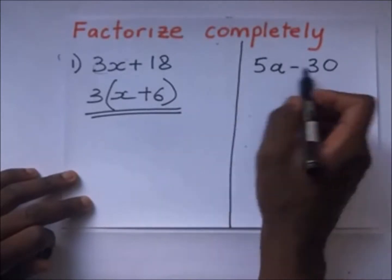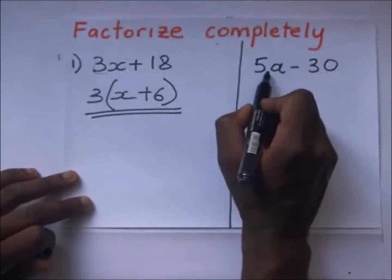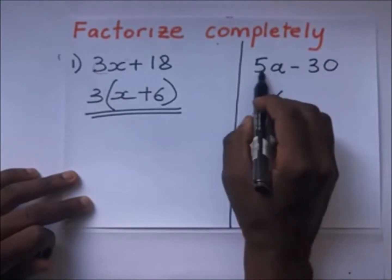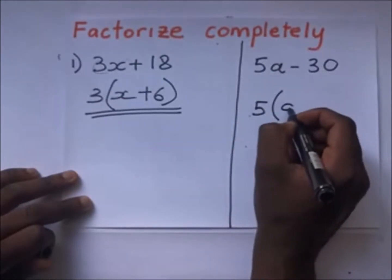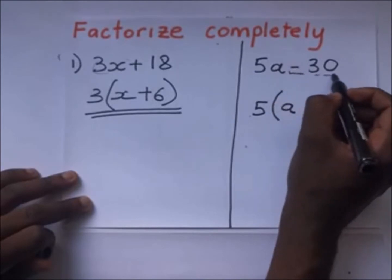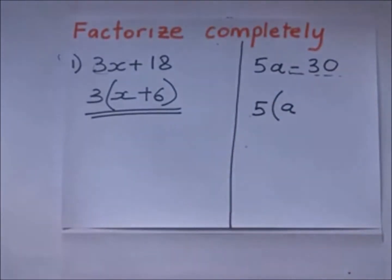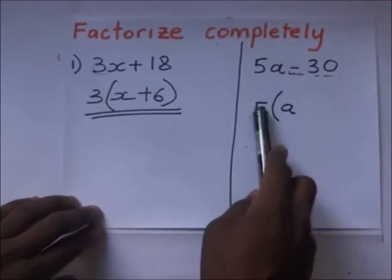We come to this one: 5a minus 30. The common factor is 5, so we put 5 outside the brackets. 5a divided by 5 gives a. We have negative 30, so it's negative 30 divided by 5.